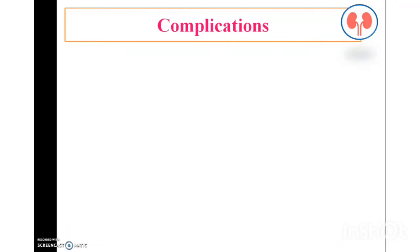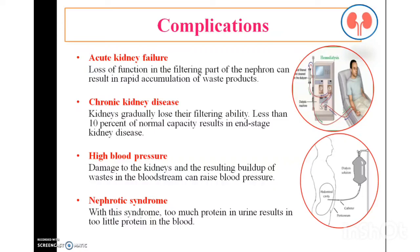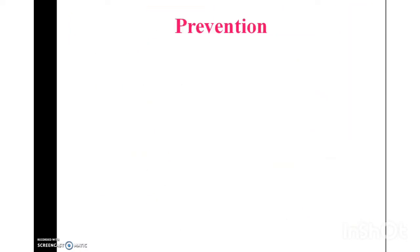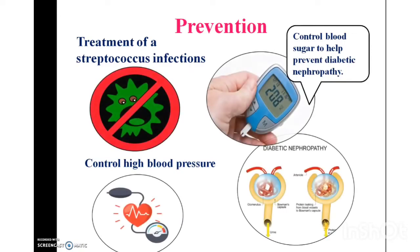Moving on to the complications: acute kidney failure, chronic kidney disease, high blood pressure, and nephrotic syndrome are the complications of nephritis. The solution for these complications includes dialysis — hemodialysis or peritoneal dialysis. Prevention includes treatment of streptococcal infections, control of high blood pressure and blood sugar to prevent diabetic nephropathy.